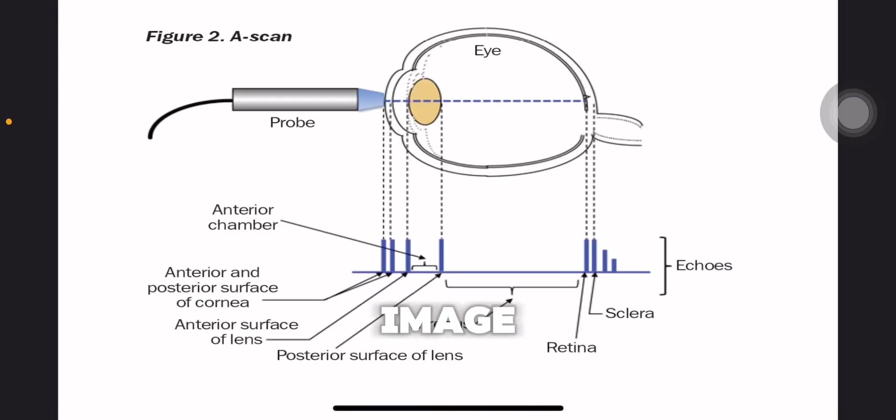So this image here provides a concrete example of how A-mode ultrasound is used, in this case to examine the eye. The first graphic here is the probe, also known as the ultrasound transducer. This is the device that emits the ultrasound waves and receives the returning echoes. In this diagram it is placed in the front of the eye.